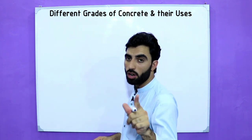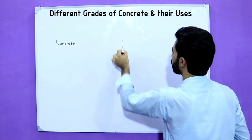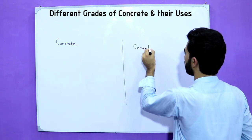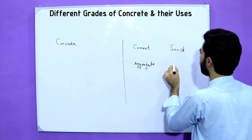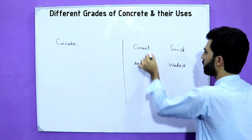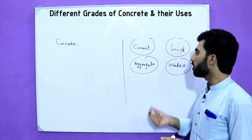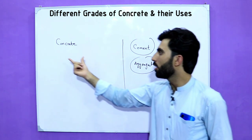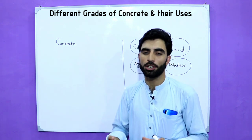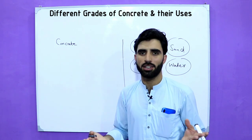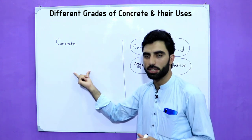First of all, concrete. Concrete is the mixture of cement, sand, aggregate, and water. With the mixing of these four materials we get concrete. Concrete is very useful in building construction because without concrete we are not able to get the strength of a building or construct any structure in civil engineering.